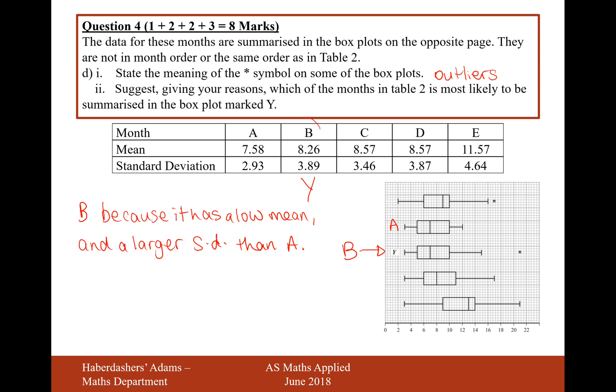So there we are. So Y is probably aligned with B. And there we are. That's the answer for question 4, worth 8 marks in total there. Let's now move on to question 5.